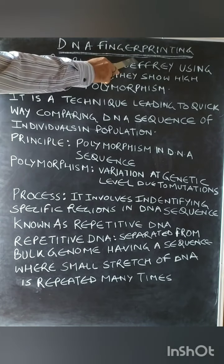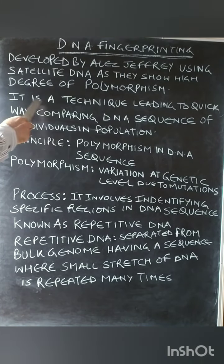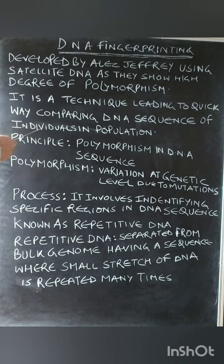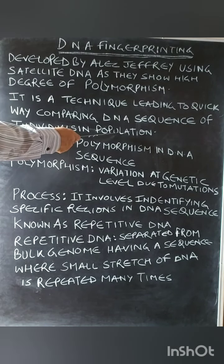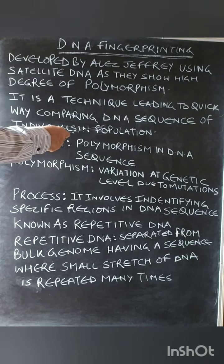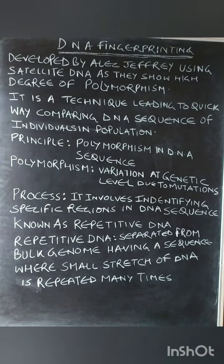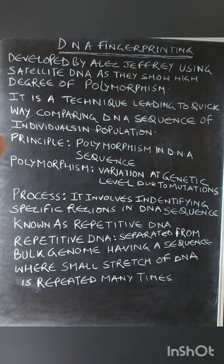DNA fingerprinting is a technique leading to a quick way of comparing DNA sequences of individuals in a population. Human population is very huge and we cannot compare the DNA sequence of each and every individual, so DNA fingerprinting gives us an easy method to compare DNA sequences among individuals.